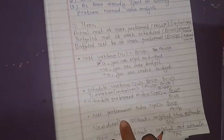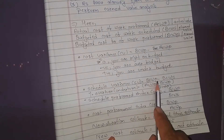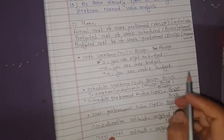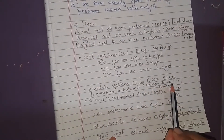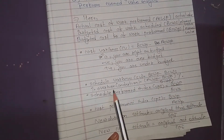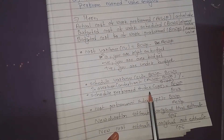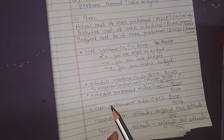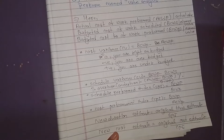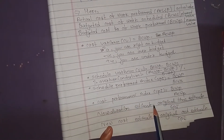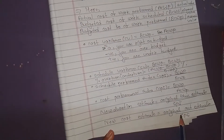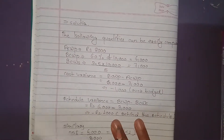We can compute the Schedule Variance, which is BCWP minus BCWS. Then we compute the cost variance percentage, which is (ACWP minus BCWP) divided by BCWP. Next is the Schedule Performance Index (SPI), which is BCWP divided by BCWS. Then CPI, the Cost Performance Index, is BCWP divided by ACWP. Finally, the new duration estimate equals original time estimate divided by SPI, and the new cost estimate equals original cost estimate divided by CPI.